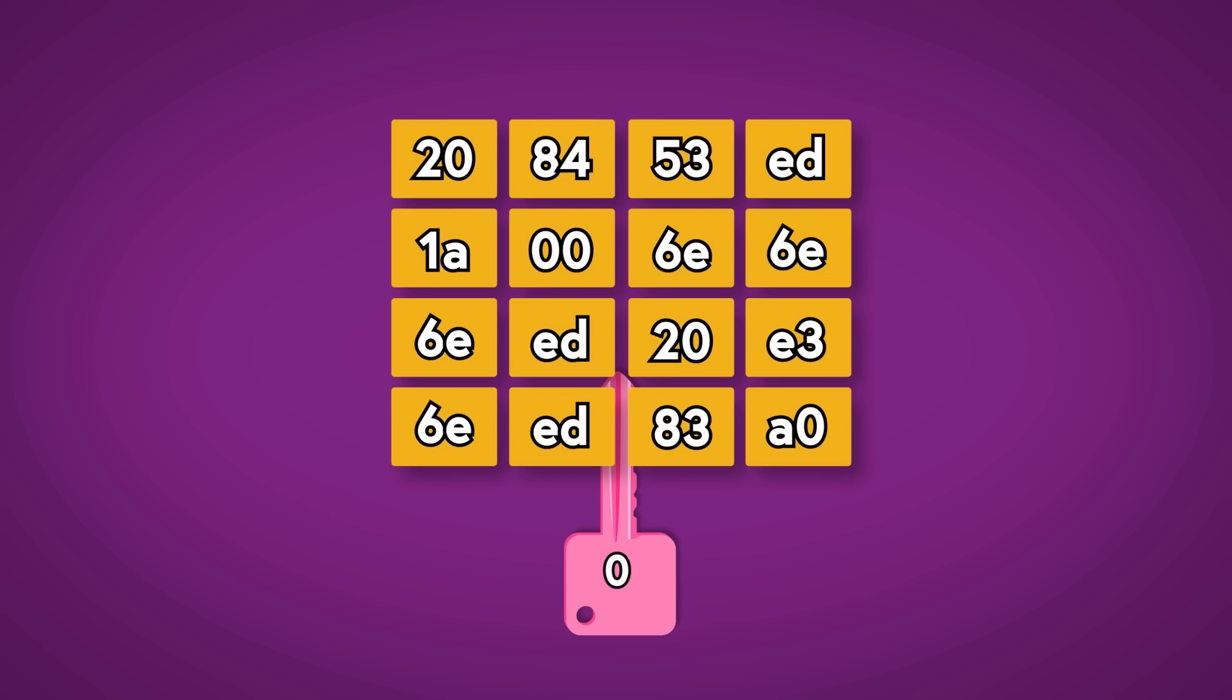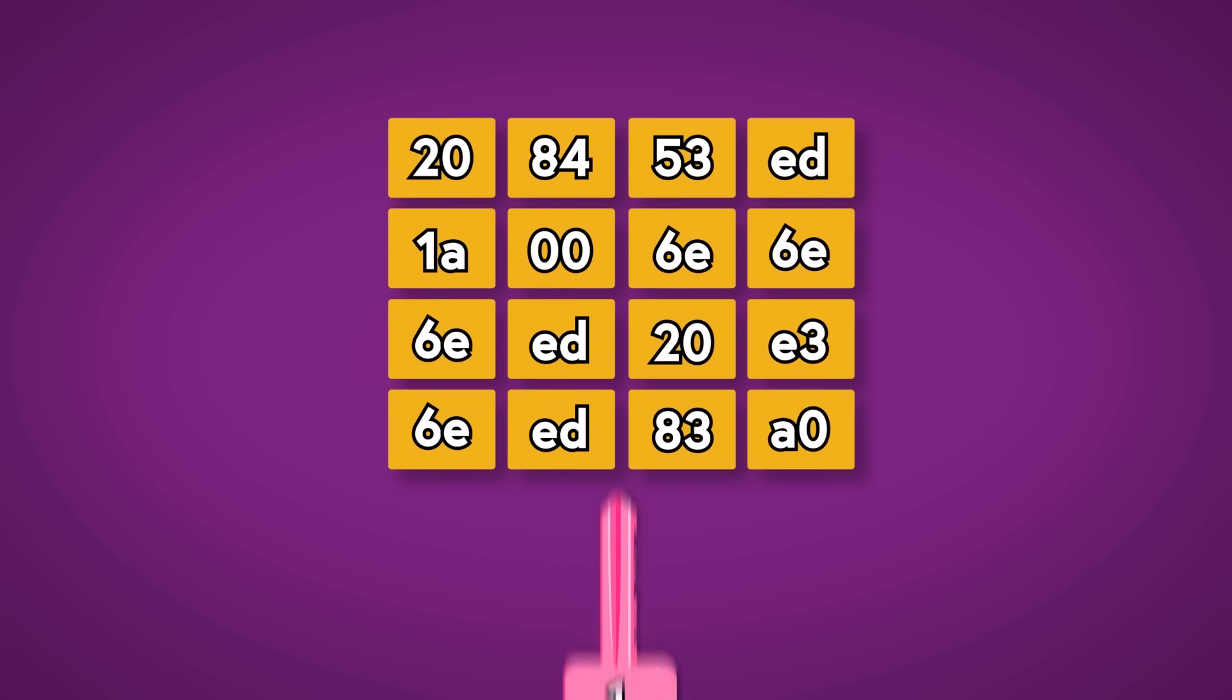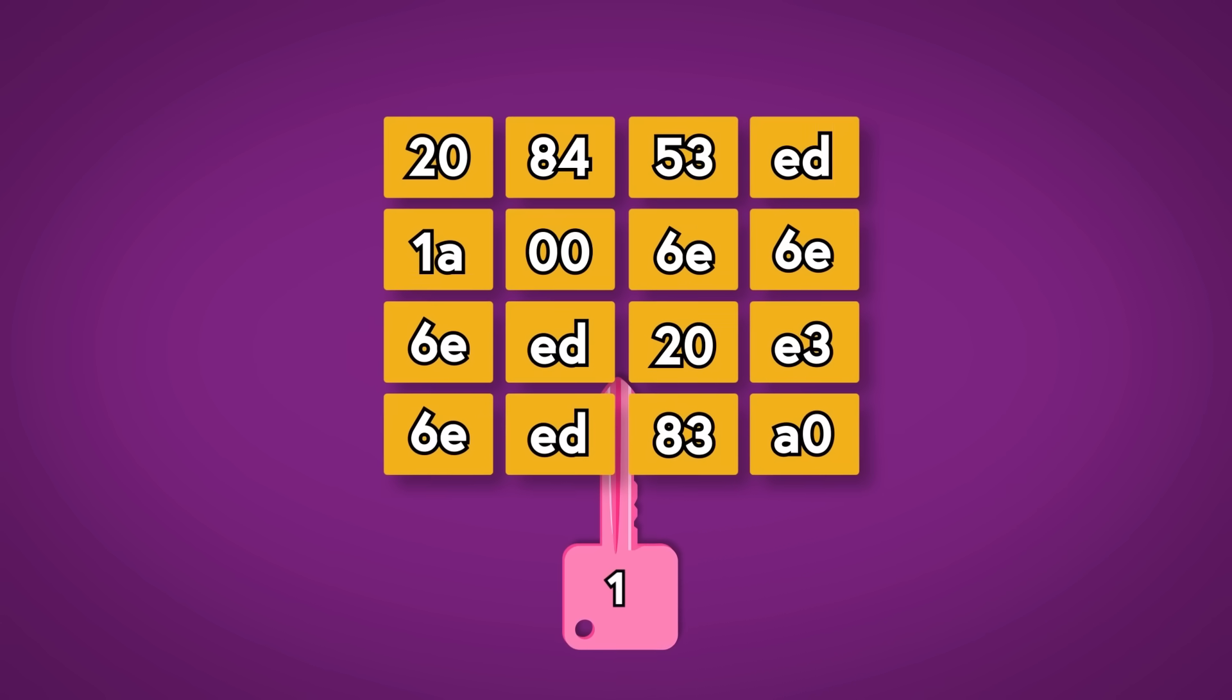In that first step, we added subkey 0, and now, after all those other steps, we're going to add subkey 1 using the same technique—that's the end of round 1.